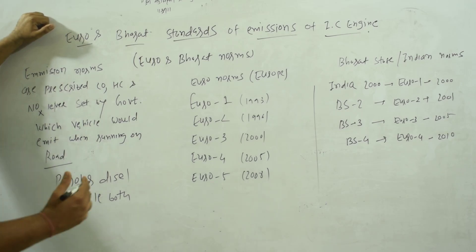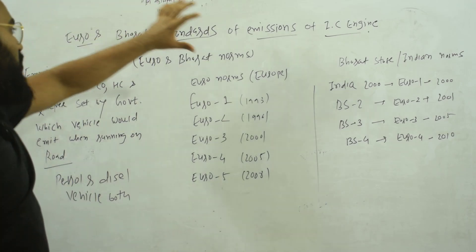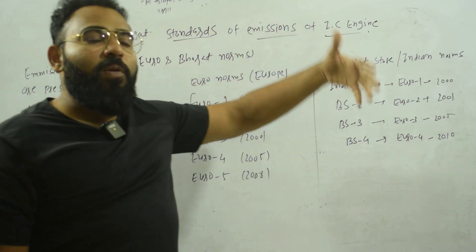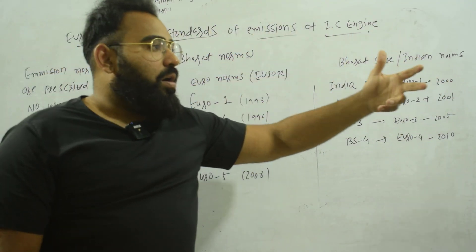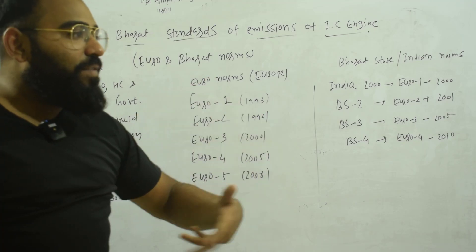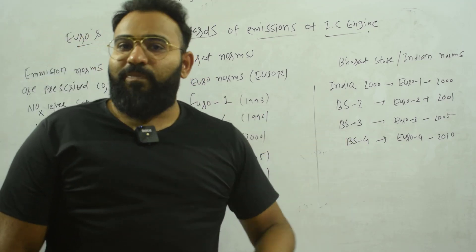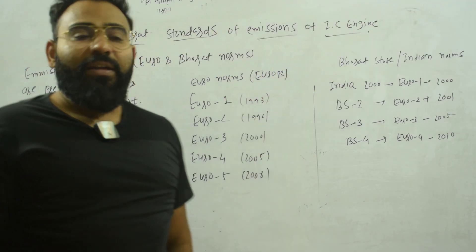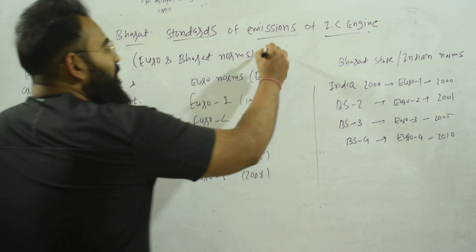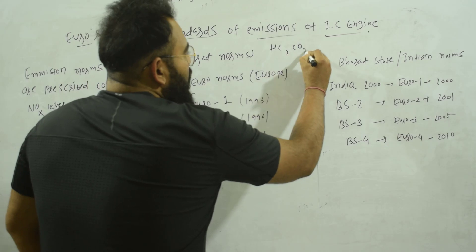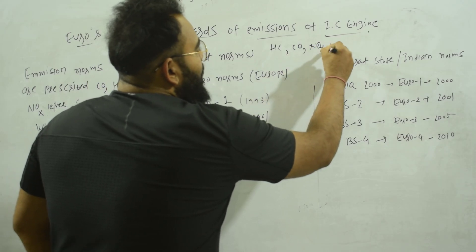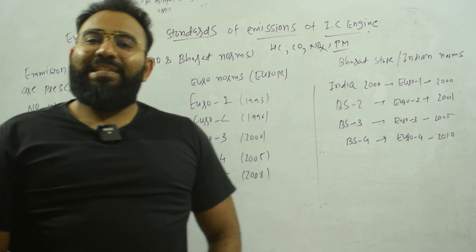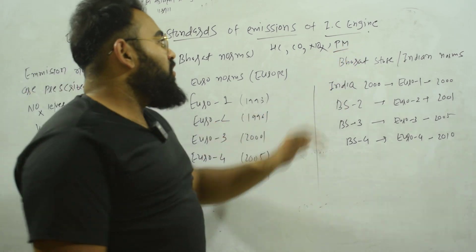There are two emission norms. When you say Euro norms, you are talking about the norms related to harmful compounds emitted from vehicles. There should be some prescribed limit to which vehicles cannot emit beyond. The harmful compounds are: HC (hydrocarbons), CO (carbon monoxide), NOx (nitrogen oxides), and PM (particulate matter).